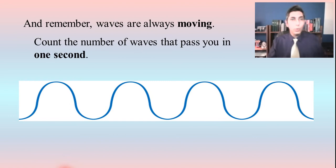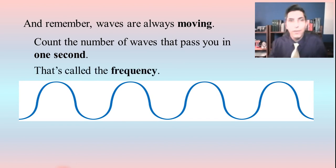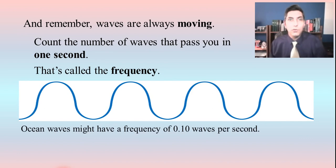In fact, one thing we can do is count the number of waves that pass us or hit us in one second. Well, that's called the frequency of that wave. Now, some waves may have a very small frequency. For example, if you're sitting on the beach and you're watching the waves roll in, you might find that the number of waves that pass you in one second is really very low. It might be like one-tenth of a wave per second. In fact, I guess that means that it takes 10 seconds for each wave to roll in. That means a wave hits you every 10 seconds. That might be how it is if it's a very calm day at the beach.